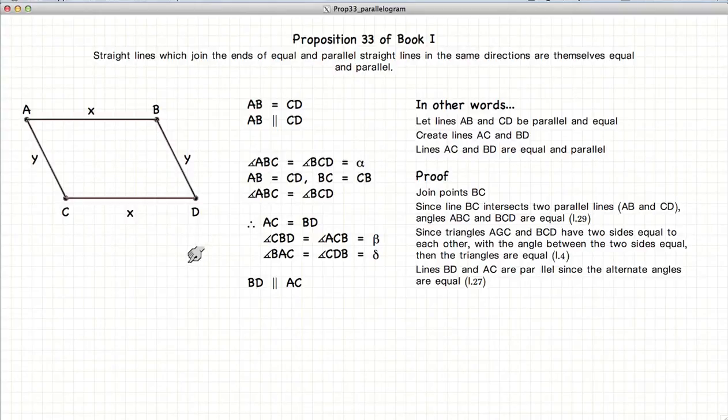So, we've just demonstrated that if the two lines AB and CD are parallel and equal length, if we join the endpoints, then the new lines will also be of equal length and parallel.